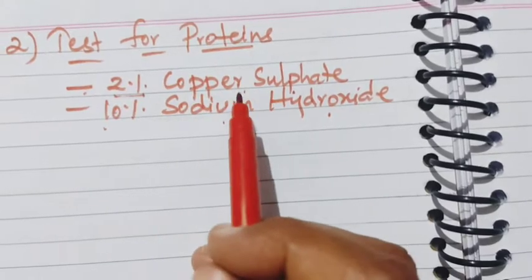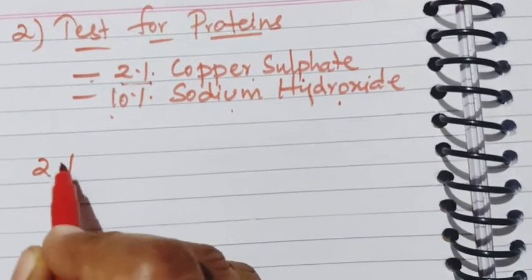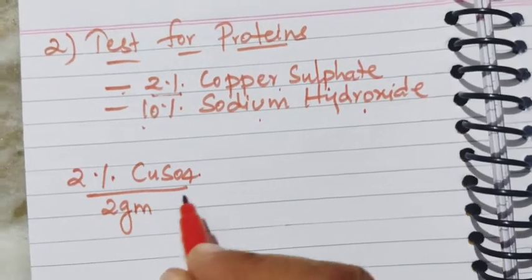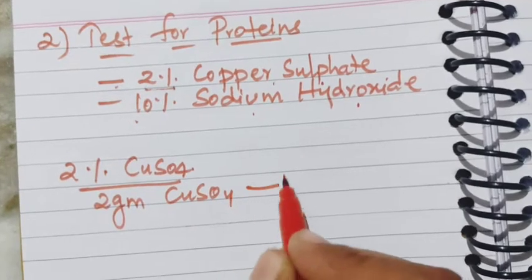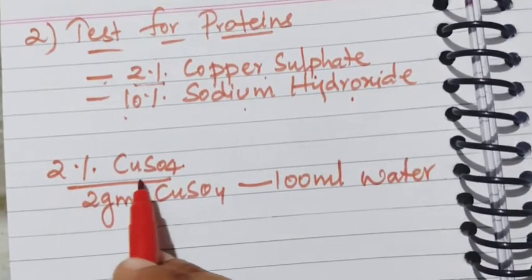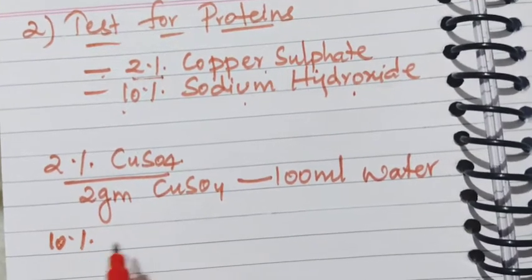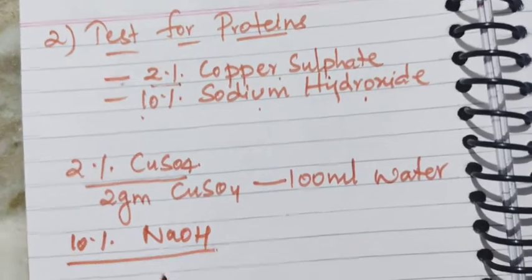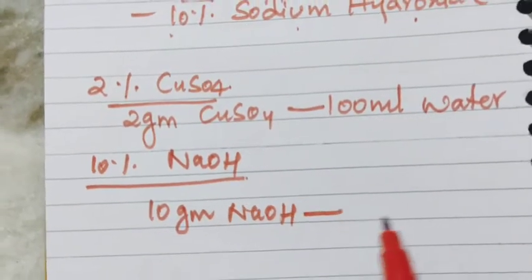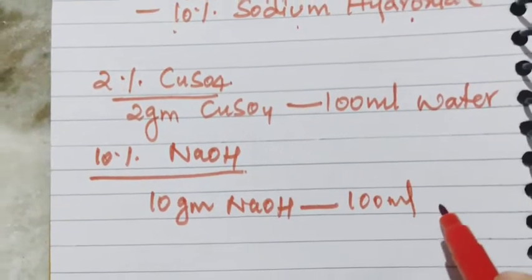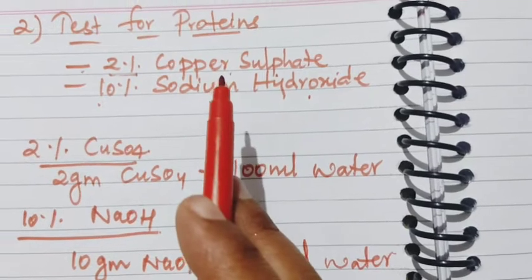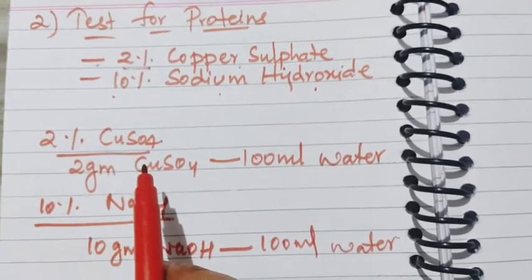The chemicals are in solid form, that is in the form of crystals. To prepare 2% copper sulfate solution, we dissolve 2 grams of copper sulfate in 100 ml of water. For 10% sodium hydroxide solution, we take 10 grams of sodium hydroxide and dissolve it in 100 ml of water. As we require these 2 solutions for testing proteins, we have to prepare them before going for the test.